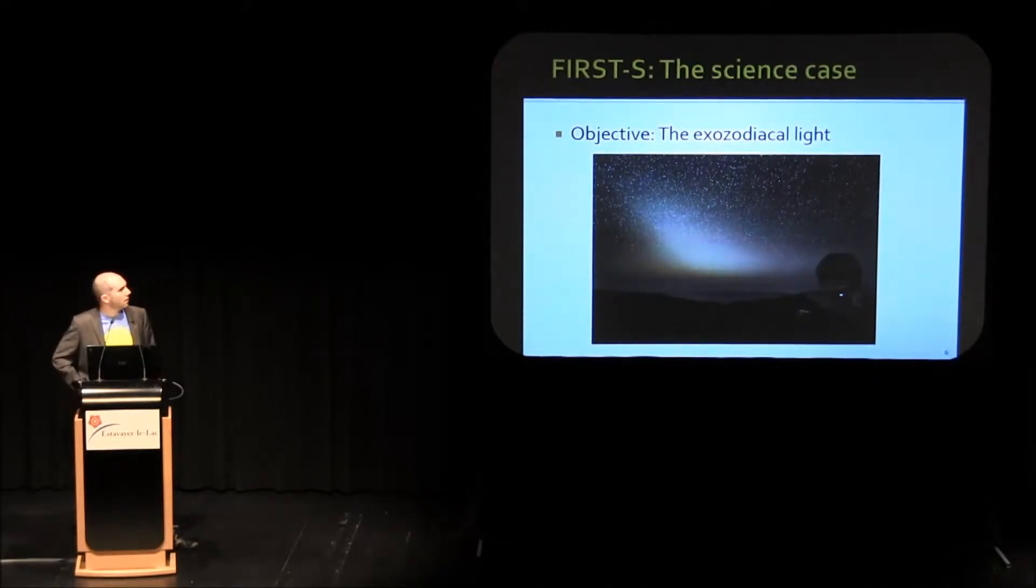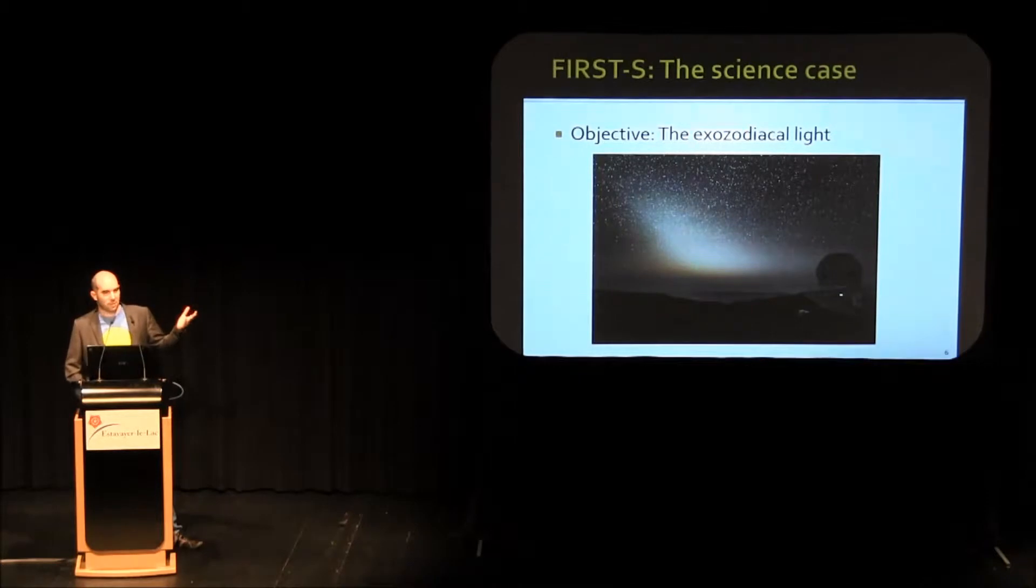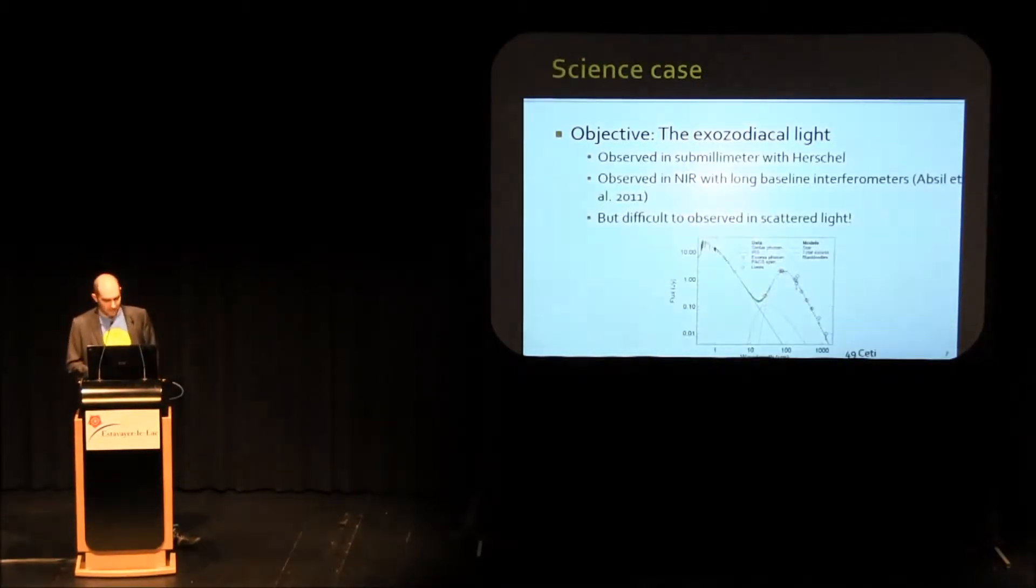The first project, as one of the many science cases, is the observation of exo-zodiacal dust. Zodiacal light you can see from the ground, from Earth. It's the scattering of the light from the sun to the dust particles which are in the zodiacal plane of our solar system. The same kind of light exists also on other solar systems where we want to find Earth-type planets.